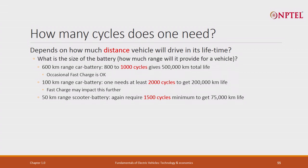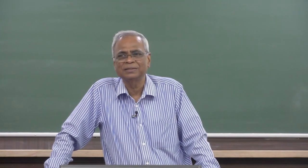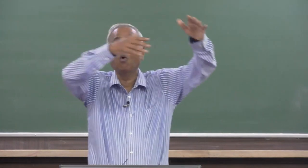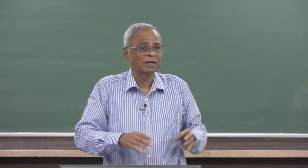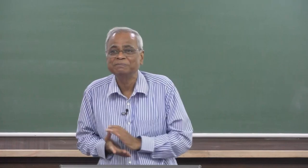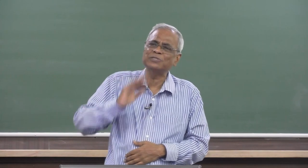Occasional fast charging is also okay, because even if instead of 800 cycles you get 600, that is 600 multiplied by 600 kilometers — around 350,000 to 400,000 kilometers. A typical vehicle, even in the west, is normally used for around 150,000 to 200,000 kilometers and then sold. So 350,000 to 400,000 is enough, and therefore 800 to 1000 cycles is sufficient.